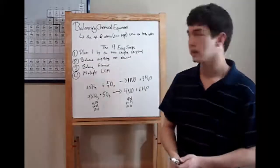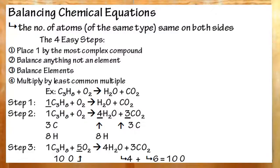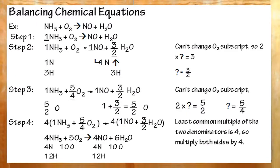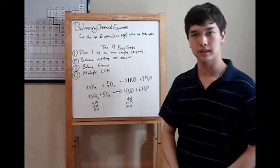To recap, make sure the number of atoms of the same type is the same on both sides. Use the four easy steps to balance your chemical equation. One by the most complex compound, balance non-elements, balance elements, multiply by the LCM to get rid of fractions. Again, I'm Brian Krier. That's all for now. See you next time.